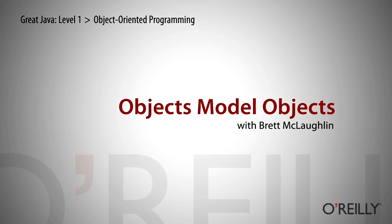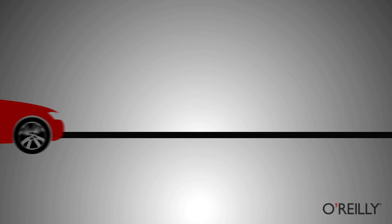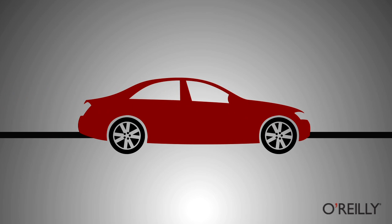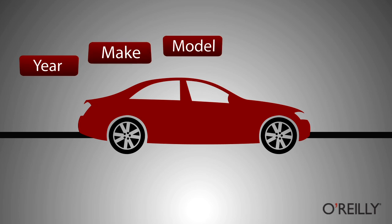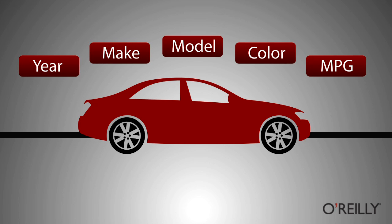We have built a car object and a car processor that creates car objects, but we haven't really talked about what objects are. When you create an object like the car object, you give it two things. First, you give it properties — the year, the make, the model, the color, the miles per gallon — and all of those are uniquely identifying this particular object.